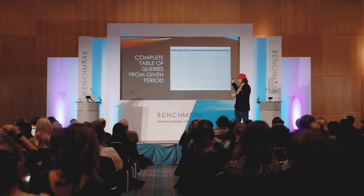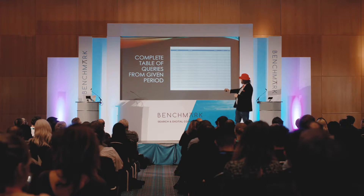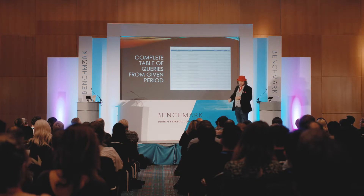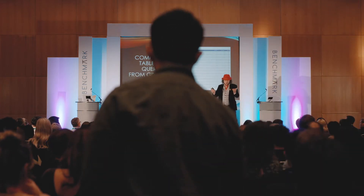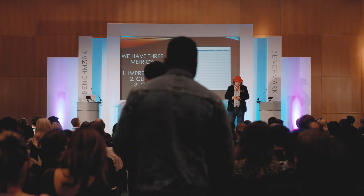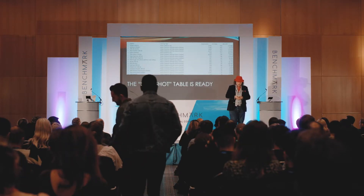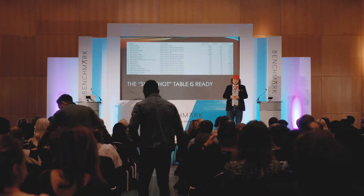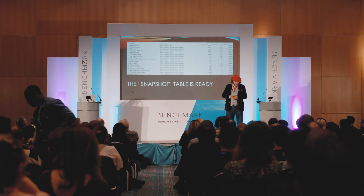I create a simple Data Studio report with just one table containing all queries, corresponding landing pages, impressions, clicks, and click-through rate — the same metrics you know from classic Search Console. That's all I need. Once the snapshot table is ready, I do something I call a tricky sort.